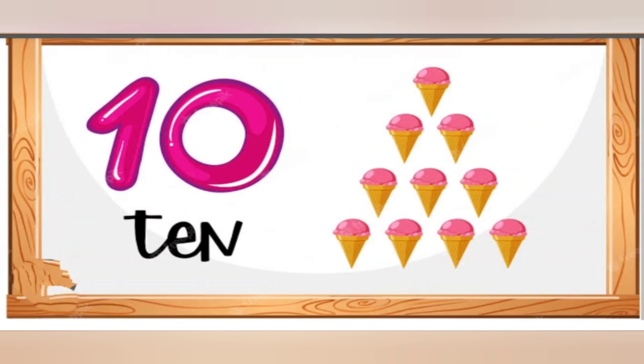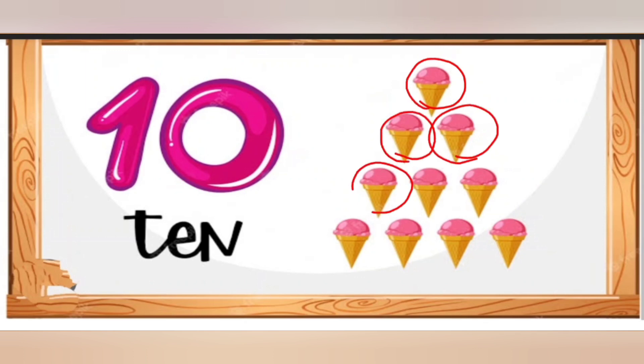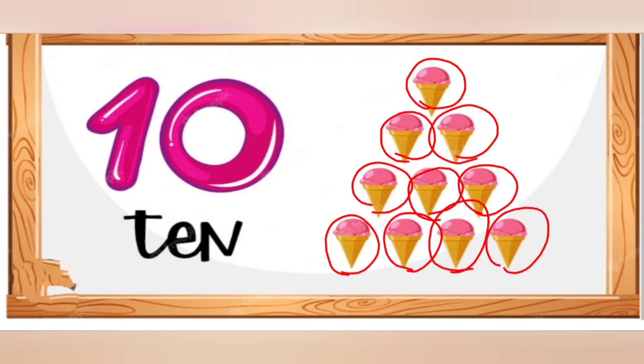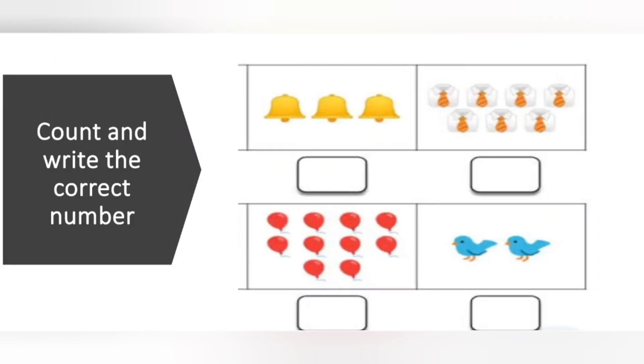Similarly, shall we count the ice cream cones here? 1, 2, 3. Count with me. 4, 5, 6, 7, 8, 9, 10. If we go line by line, there will be no confusion and there will be no missing. How many ice creams are there? 10 ice creams.